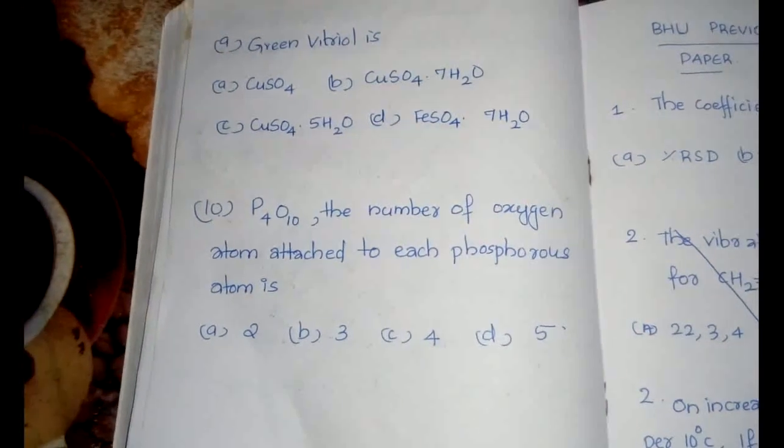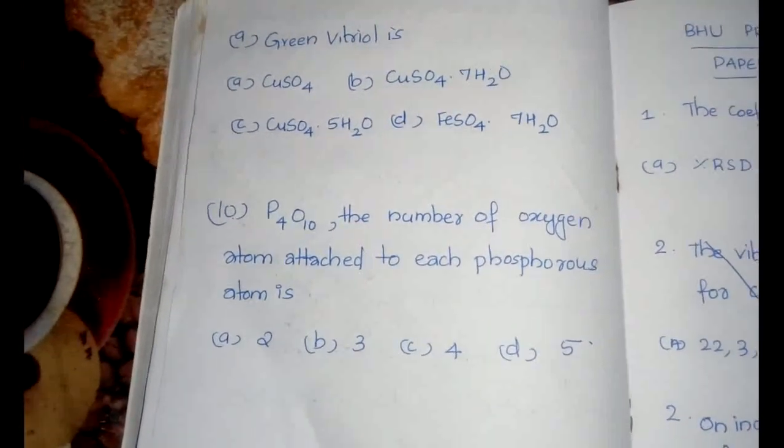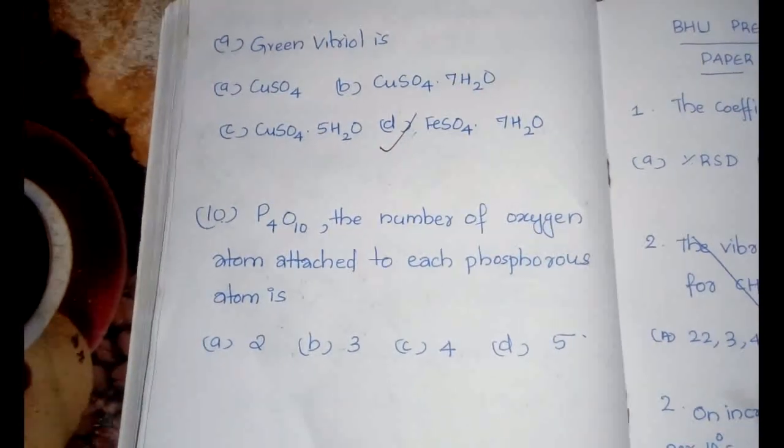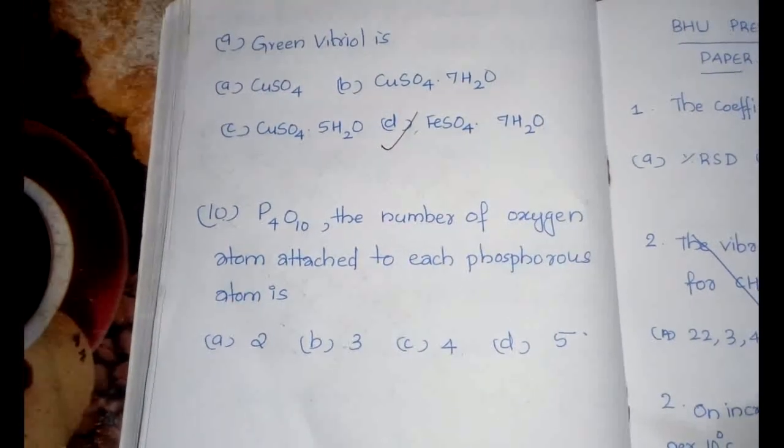The next question is: green vitriol is? Option D is the correct answer. FeSO4·7H2O is known as green vitriol.